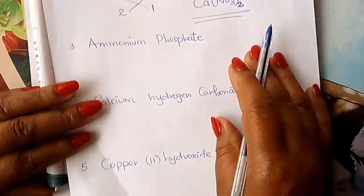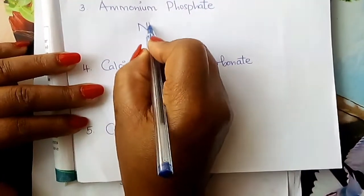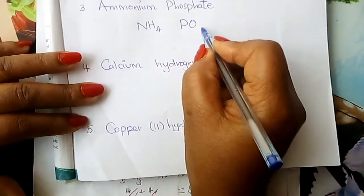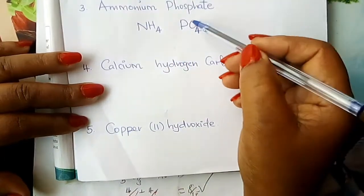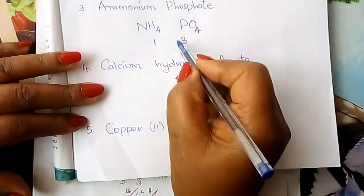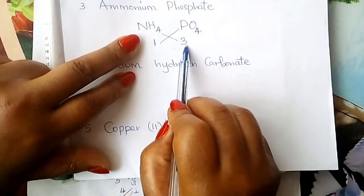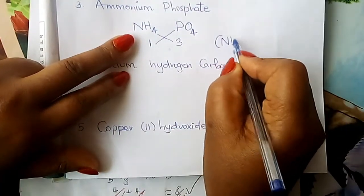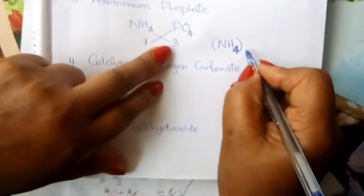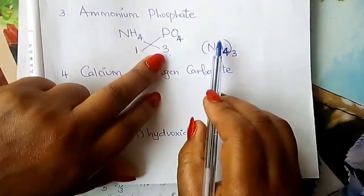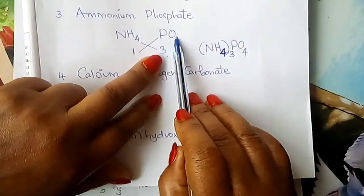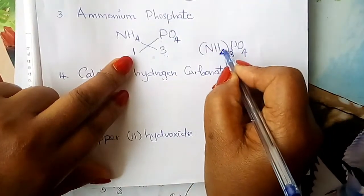We go to ammonium phosphate. Ammonium is a radical — we have said it is NH4 with a positive charge. Phosphate we have sung as PO4 with charge three-negative. Ignore the charges. Valency of ammonium is one; valency of phosphate is three. Interchange: ammonium takes three. Since it is a radical taking more than one, put it inside a bracket — most students fail at this point — so you write (NH4)3. Phosphate radical takes one, so just write PO4. The formula is (NH4)3PO4.